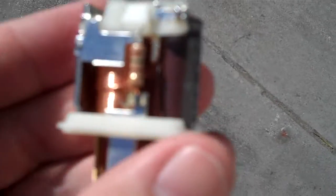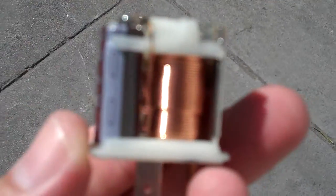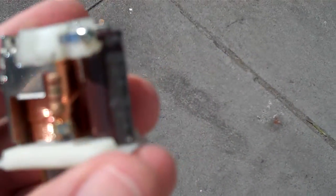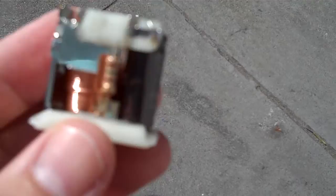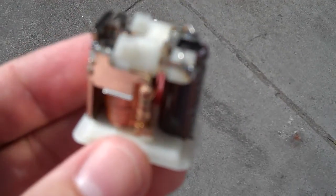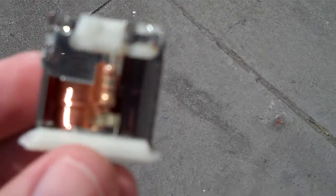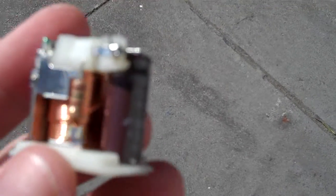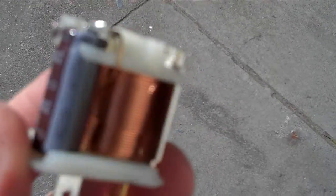As you can see inside this flasher relay, it's probably one of the most entry-level relays that you can find. Hence the reason why when people connect up LEDs to their bikes, they don't work because they don't draw enough current. This is an entry-level flasher.